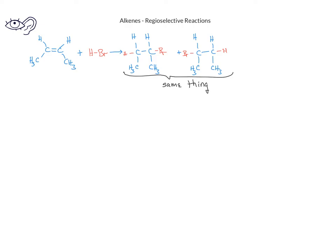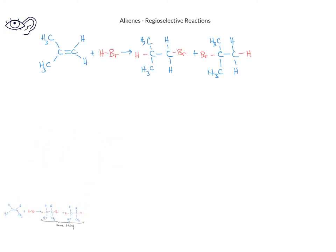What would happen if we had an asymmetric alkene reacting with hydrogen bromide? In this example, we'll have two methyl groups off of one of the sp2 carbons and two hydrogens bonded to the other sp2 carbon. In this case, we can get two different products depending on whether the hydrogen bonds to the carbon with the methyl groups or the carbon with the two hydrogens.